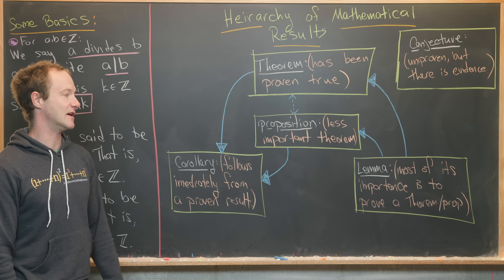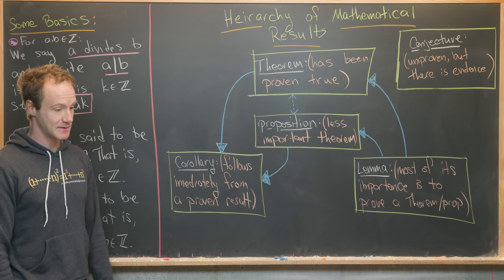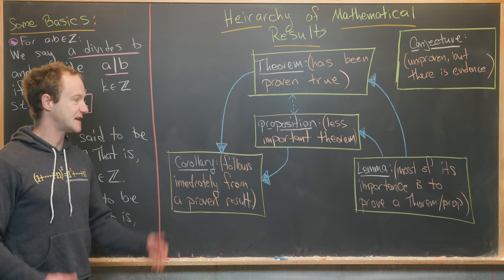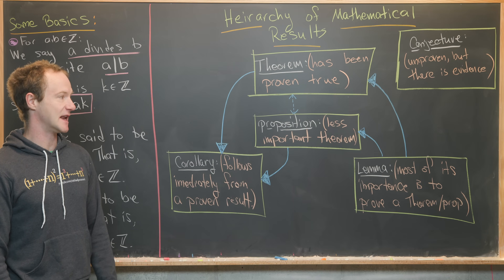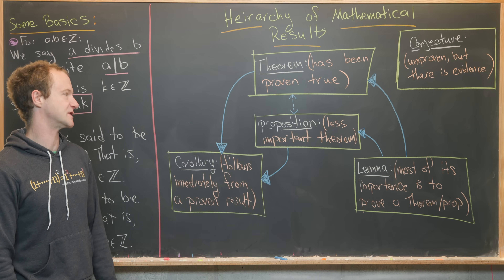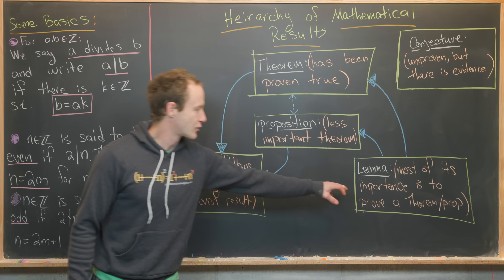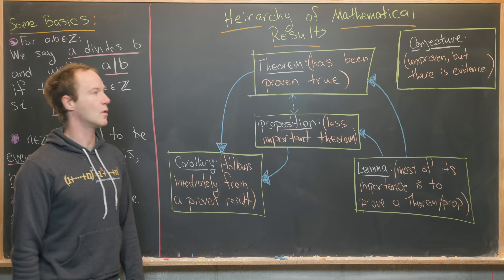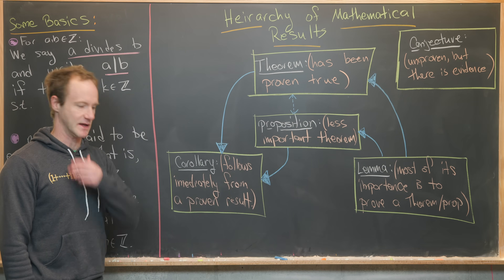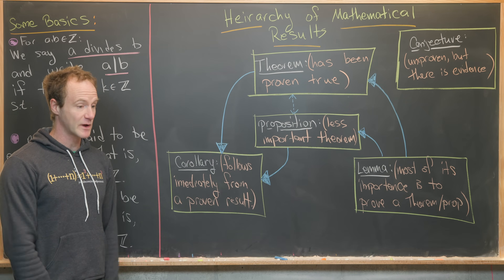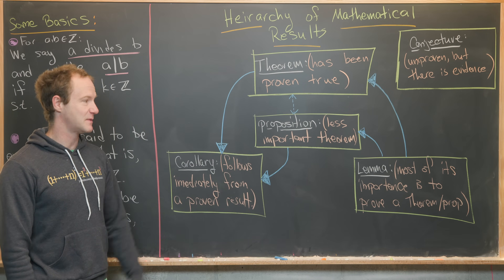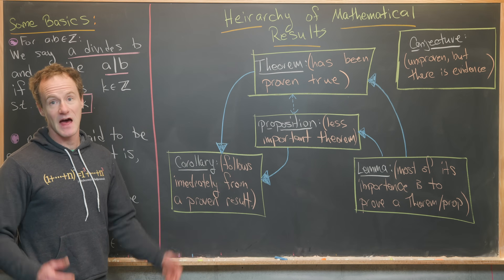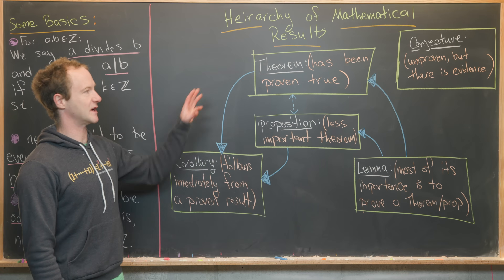Next, we've got the idea of a lemma. A lemma is a mathematical result that is true, but the most interesting thing about it is that it's really helpful to prove a theorem or a proposition — you might prove it as a starting result to make the proof more elegant. Now there are some really famous things called lemmas, like Zorn's lemma, but we're not really going to talk about those.